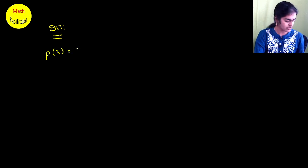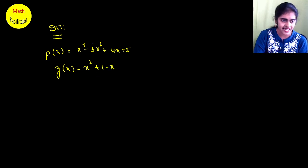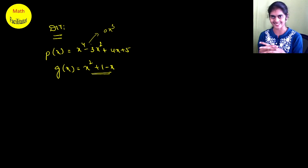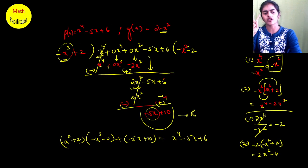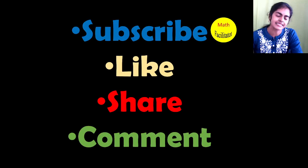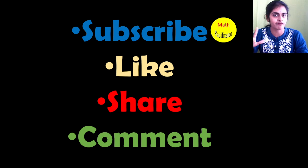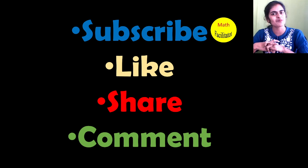Here is a DIY problem for you: if P(x) = x⁴ - 3x² + 4x + 5 and G(x) = x² + 1 - x, please divide them. Note that the x³ term is missing in P(x) so write 0·x³, and G(x) is not in order so rearrange it first. I hope this session was useful. If you have any doubts, let me know in the next session. Thank you for watching — subscribe to Math Facilitator, free notes are available on the Math Facilitator website, and please like, share, and comment!